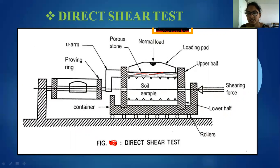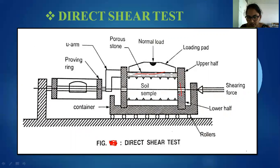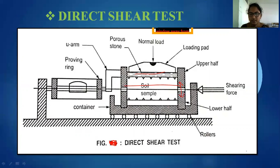The difference between the direct shear test and the vane shear test is: in the direct shear test, the load is applied vertically but shearing is horizontal — the box has two halves and shears in the horizontal direction, visible to the naked eye. But in the vane shear test, the shearing will be vertical.